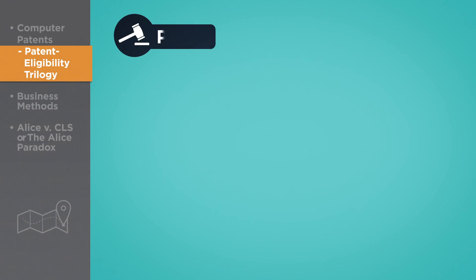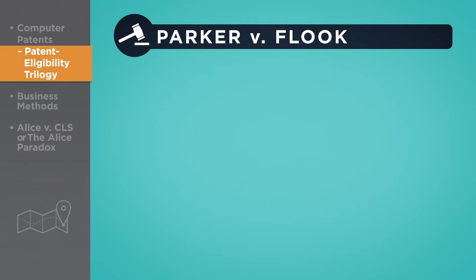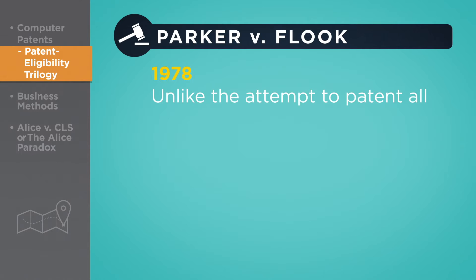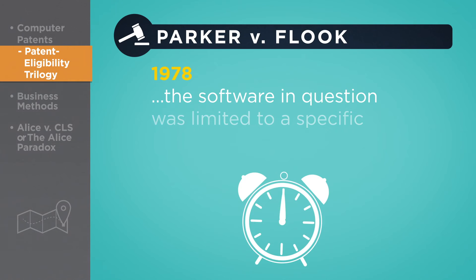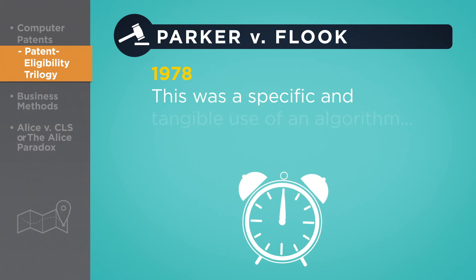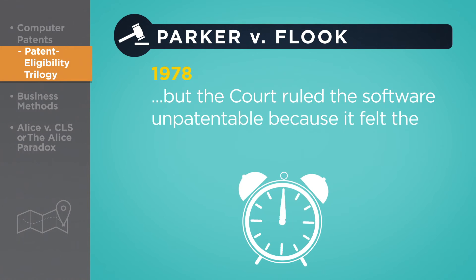The Supreme Court further refined its thinking on software patentability in the 1978 case Parker v. Flook, the second case in the trilogy. Unlike the attempt to patent all uses of an algorithm, the software in question was limited to a specific application — triggering an alarm during the catalytic chemical conversion of hydrocarbons. This was a specific and tangible use of an algorithm, but the court still ruled the software unpatentable because it felt the application itself was not inventive.